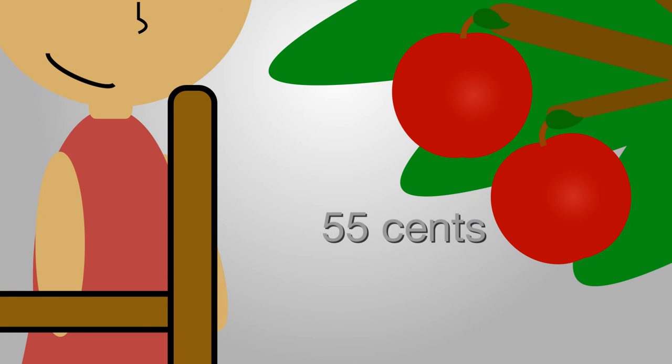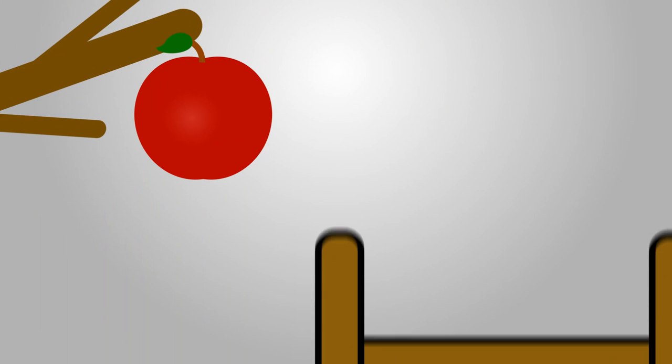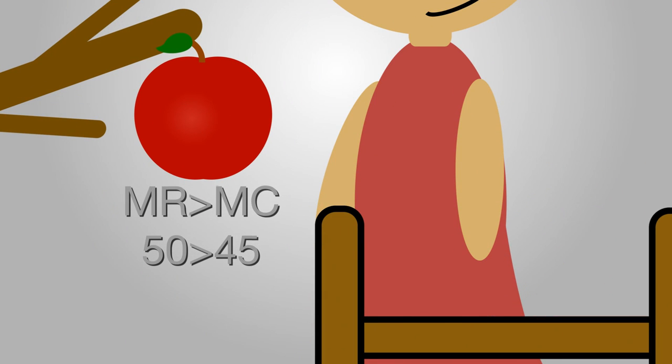Since Jan can only get 50 cents for an apple, she will stop picking apples when the marginal cost is greater than the marginal revenue she receives. Thus, she will harvest the apples at the bottom of the tree and make 20 cents per apple. She will also harvest those apples in the middle and make 5 cents per apple.